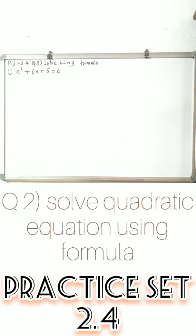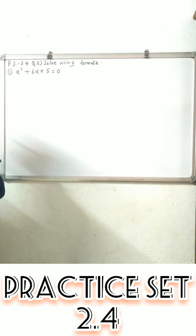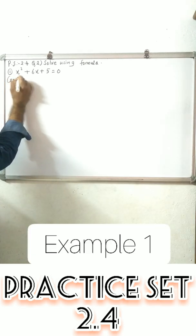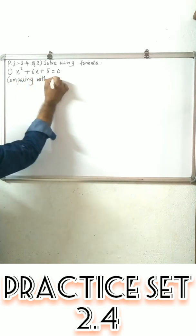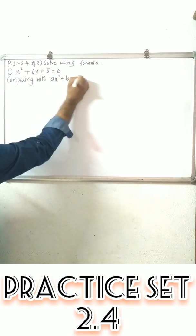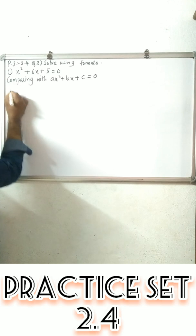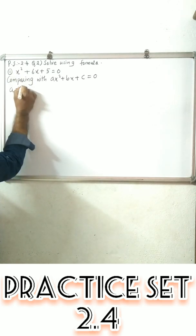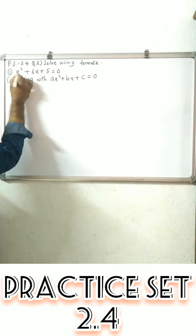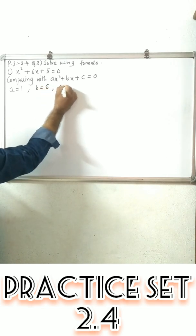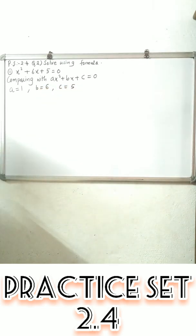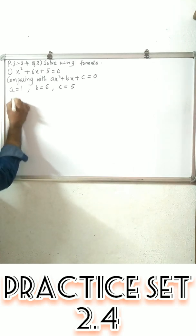Question number 2: Solve using the formula. First example: x² + 6x + 5 = 0. Comparing with the standard form, we get a = 1, b = 6, and c = 5. So first we find the value of the discriminant: b² minus 4ac.